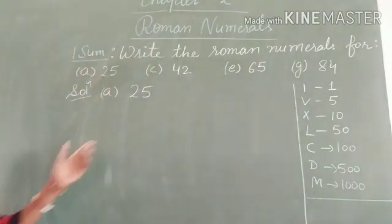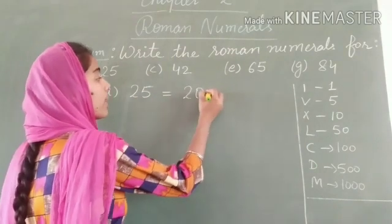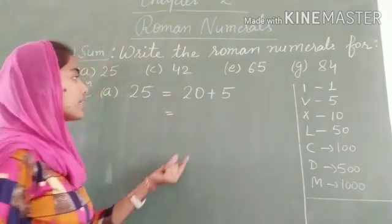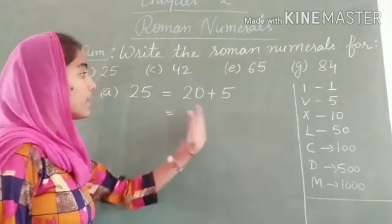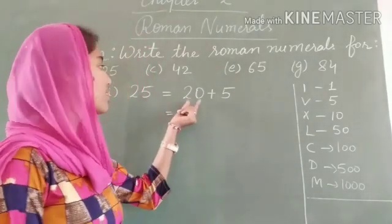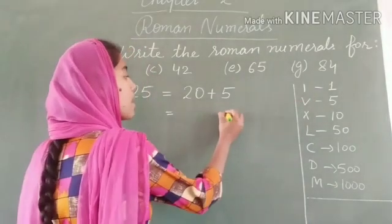Now let's start with the first part: 25. How can I write 25? 25 can be written as 20 + 5. If we look at these symbols, we do not have a symbol for 20, but we have one for 5. For 5, we write V.